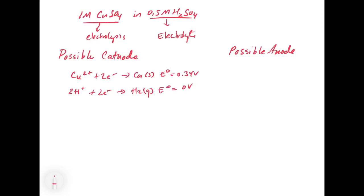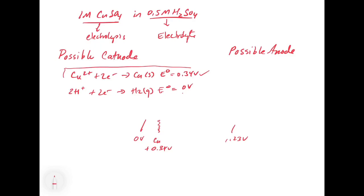Our window goes from 0 volts to 1.23 volts. Copper is at +0.34 volts, so it falls within our window and is more spontaneous than hydrogen gas formation. That's the cathode reaction we're going to select: the reduction of copper, because it's more spontaneous than hydrogen gas formation and occurs at a potential within our window.